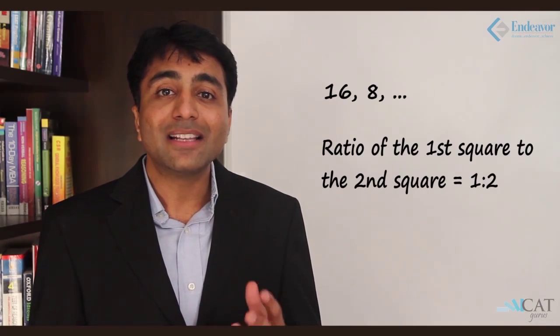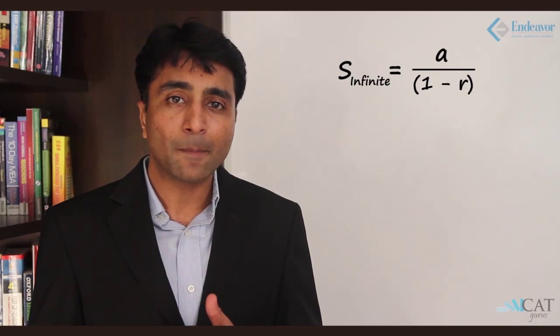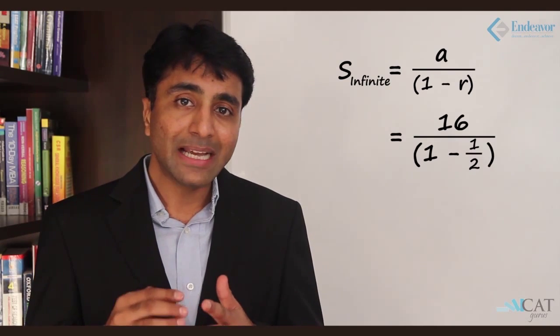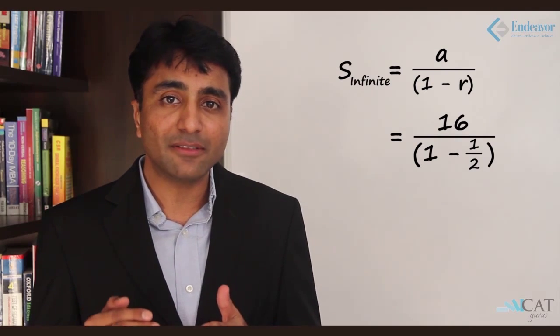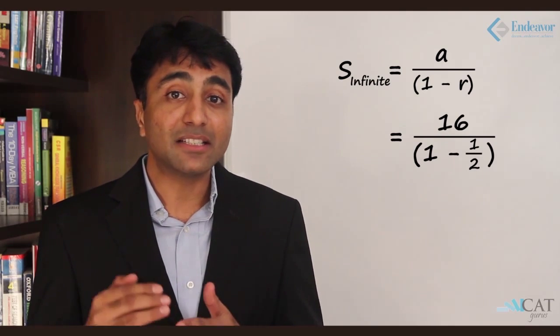The ratio of areas from the first square to the second square is 16 to 8, which is 1/2. This process continues to infinity. The total area of all squares is given by the sum of an infinite GP: a upon (1 minus r) = 16 upon (1 minus 1/2) = 16 upon (1/2) = 32 square units. Hence the sum of all areas of all squares formed is 32 square units.